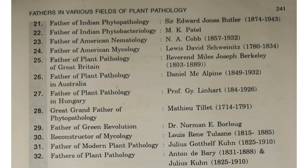Father of plant pathology of Great Britain is Joseph Burkely — remember: 'B' for Burkely, 'B' for Britain. Father of plant pathology in Australia is Daniel McAlpine — 'A' for Alpine, 'A' for Australia. Father of plant pathology in Hungary is Linhart — remember he was passionate about Hungary.